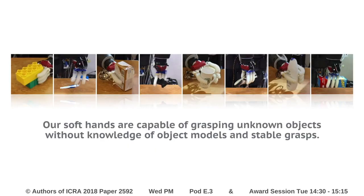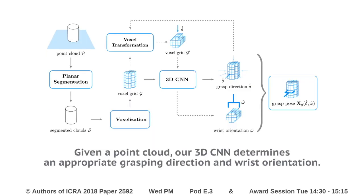Our soft hands are compliant and capable of grasping unknown objects without knowledge of the object model or suitable grasps. Our grasping pipeline starts from the point cloud from the depth sensor and then segments the object cloud from the point cloud.